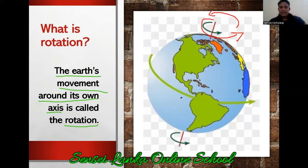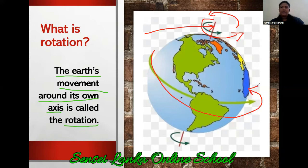Can you see the axis in red color? This is the axis. So the earth is moving around itself — this is the rotation. So now I think you all understand what is rotation.